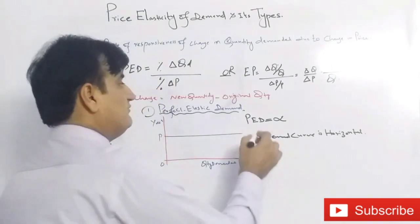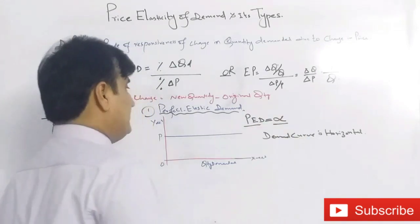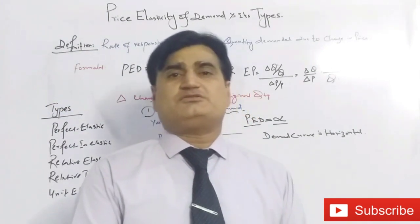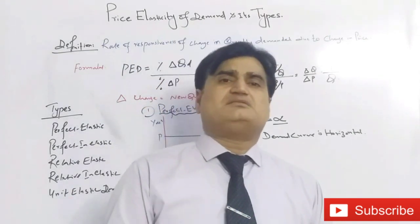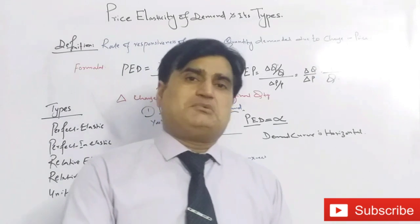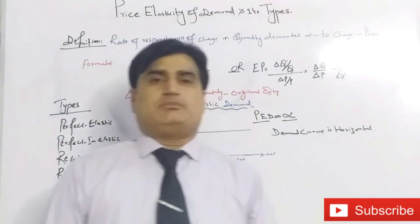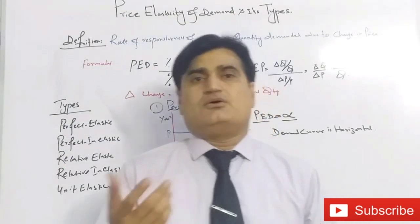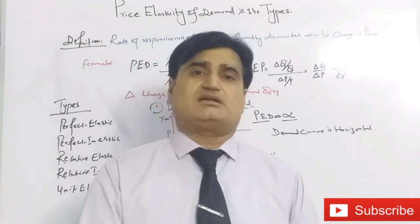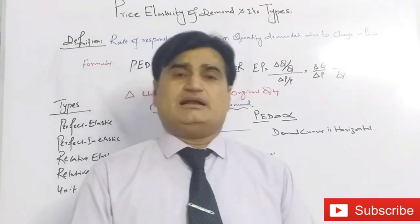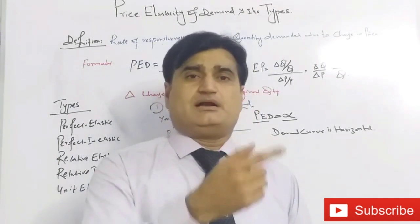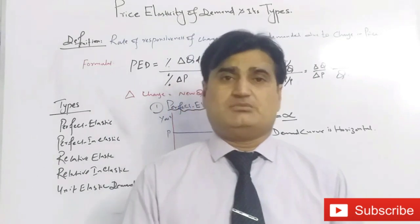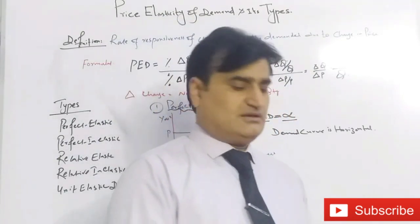This is Perfect Elastic Demand where price elasticity of demand is infinity. The second type is Perfect Inelastic Demand, where the consumer does not respond to change in price. Whatever the price, the consumer is bound to purchase the same quantity. The best example of Perfect Inelastic Demand is salt, or addictive things like alcohol. The price of salt is 20 rupees per kg and we demand 2 kg per month. If the price increases or decreases to 100 or 10 rupees, we will not change our demand for salt. Under Perfect Inelastic Demand, the demand curve is vertical.